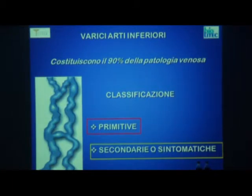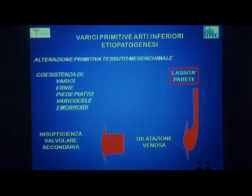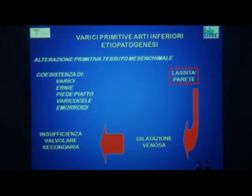Le varici degli arti inferiori costituiscono il 90% di tutte le patologie venose degli arti inferiori e vengono classificate in primitive e secondarie. Le primitive sono sicuramente quelle più frequenti e alla base vi è un'alterazione del tessuto mesenchimale, tanto che spesso vi è un'associazione tra varici, ernie, piede piatto, varicocele e anche le morroidi.